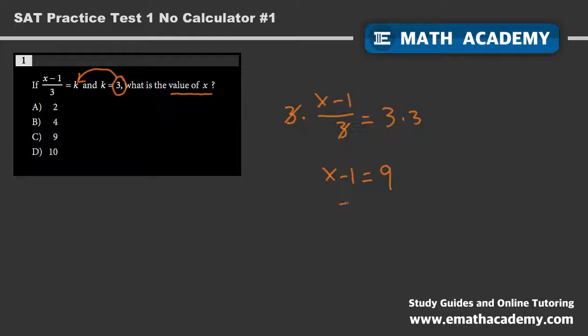Then we can just add 1 to both sides. Plus 1, plus 1, these cancel out, and x is equal to 9 plus 1, which is 10.